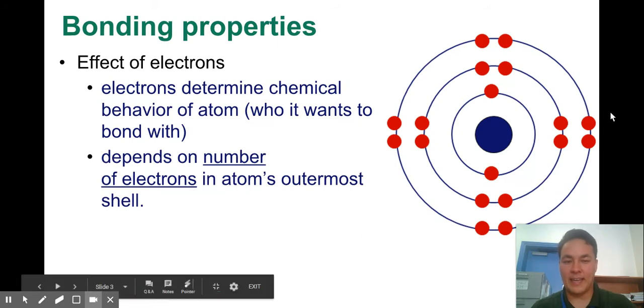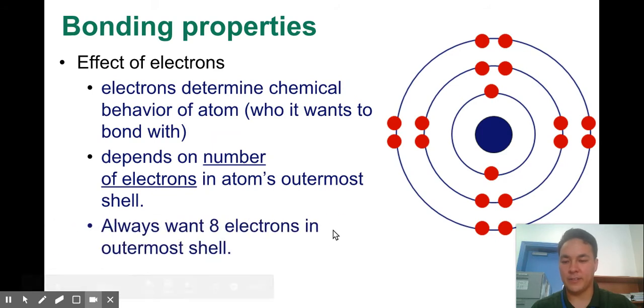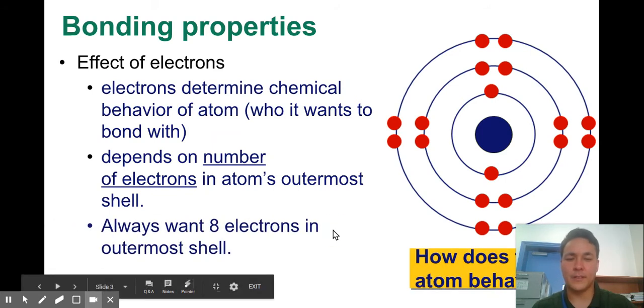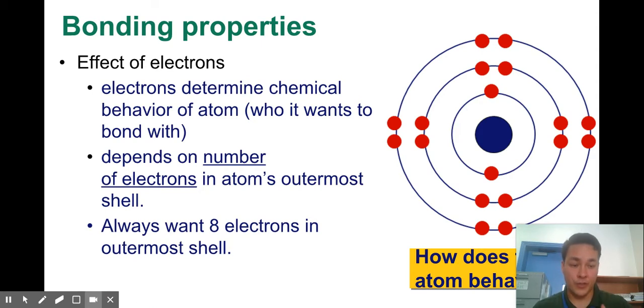Don't forget that we want eight. Eight is great in our outer shell, in the valence electron shell. So atoms are going to do things to get those eight electrons. They're either going to share them in a covalent bond, or they're going to transfer those electrons in an ionic bond.